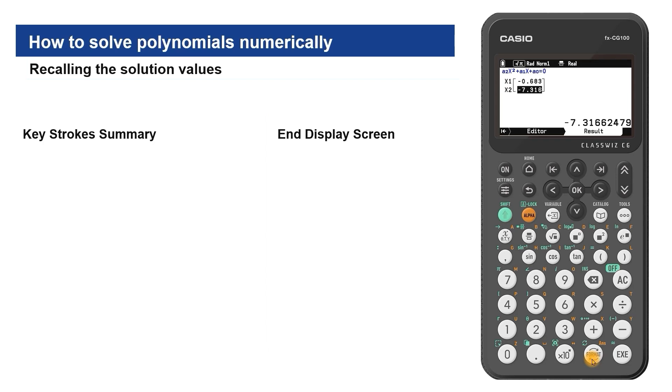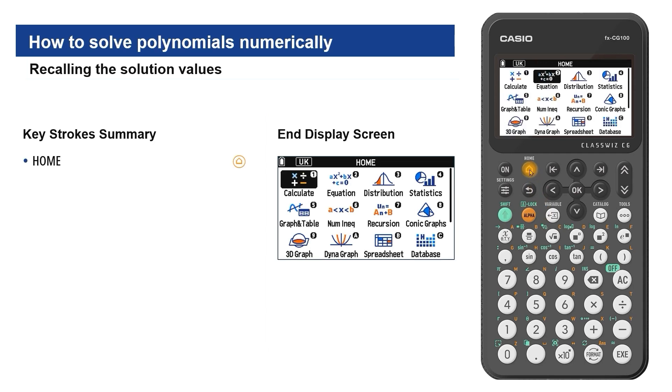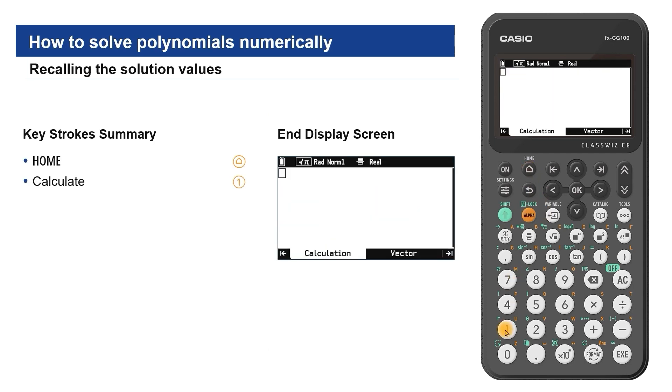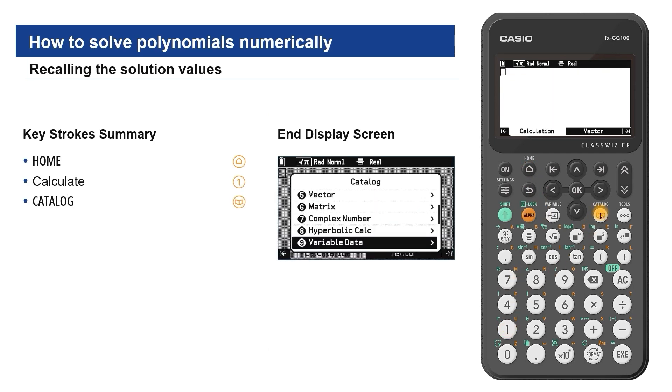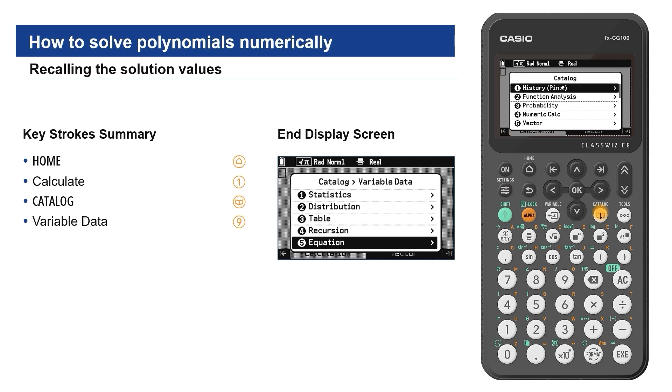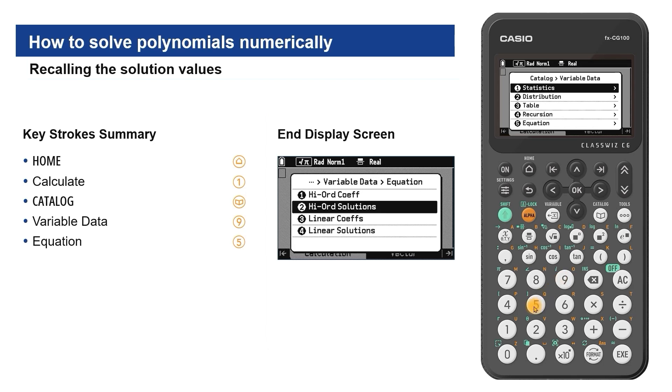If required, these solutions can be recalled for further calculation. From home, navigate to calculate. Then press catalogue. Scroll or use the shortcut to select variable data. Then select equation.